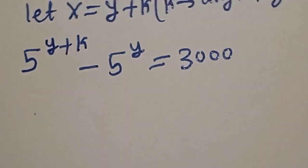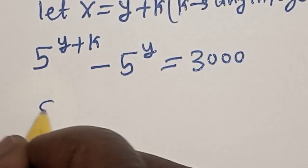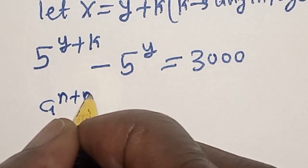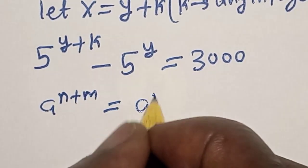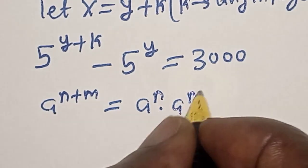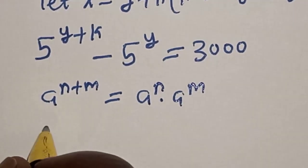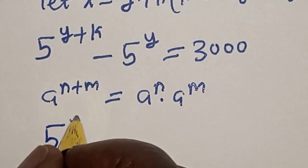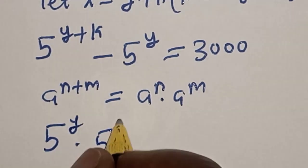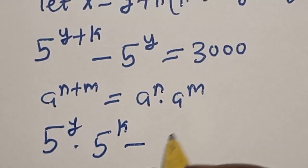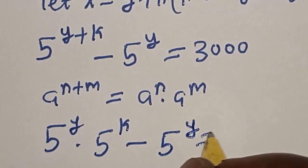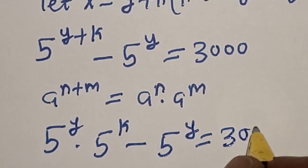We then have 5 raised to power y plus k minus 5 raised to power y is equal to 3000. Remember this rule: a raised to power n plus m equals a raised to power n multiplied by a raised to power m. So we have 5 raised to power y multiplied by 5 raised to power k, minus 5 raised to power y, equal to 3000.